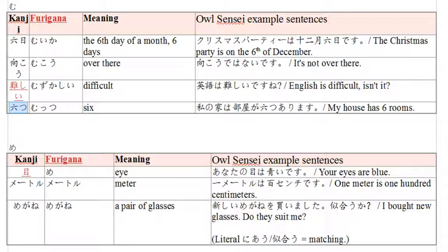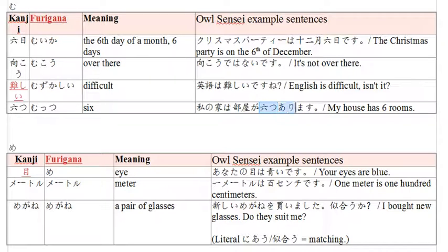And we have muttsu - muttsu for six, like a counter. So: watashi no uchi wa heiya ga muttsu arimasu. My house has six rooms. Watashi no uchi is my house, heiya means rooms, ga marks the subject, and muttsu arimasu means there are six. We use arimasu and not imasu because they're inanimate things. So six rooms arimasu - the things are heiya, rooms, and they are in my house. My house has six rooms.